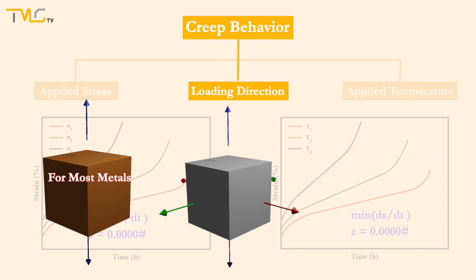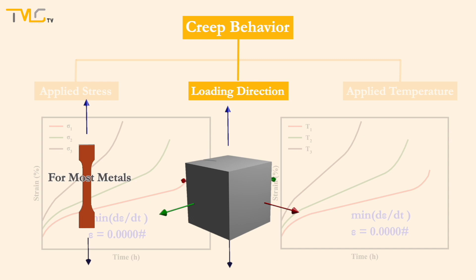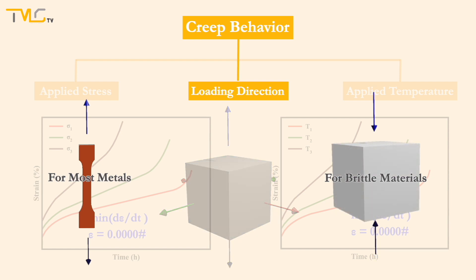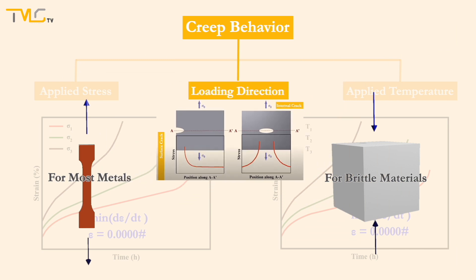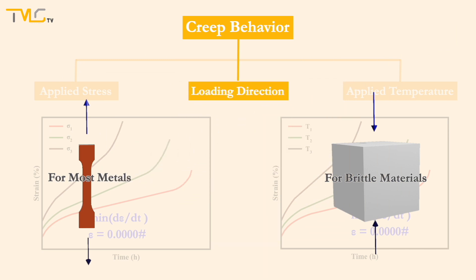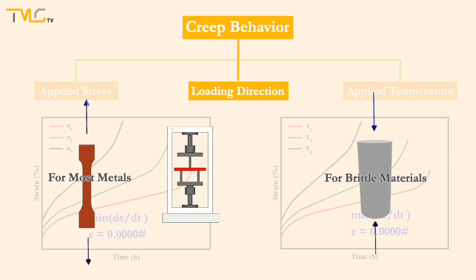Additionally, the metal samples having dog-bone geometry are employed for testing. However, for brittle materials, creep tests are conducted under uniaxial compression, rather than uniaxial tension. Uniaxial compression is employed to prevent any stress amplification due to the presence of surface or internal cracks under tensile loading. Furthermore, for creep testing of brittle materials, cylindrical sample geometry, which is similar to 3- and 4-point bending test samples, is employed.